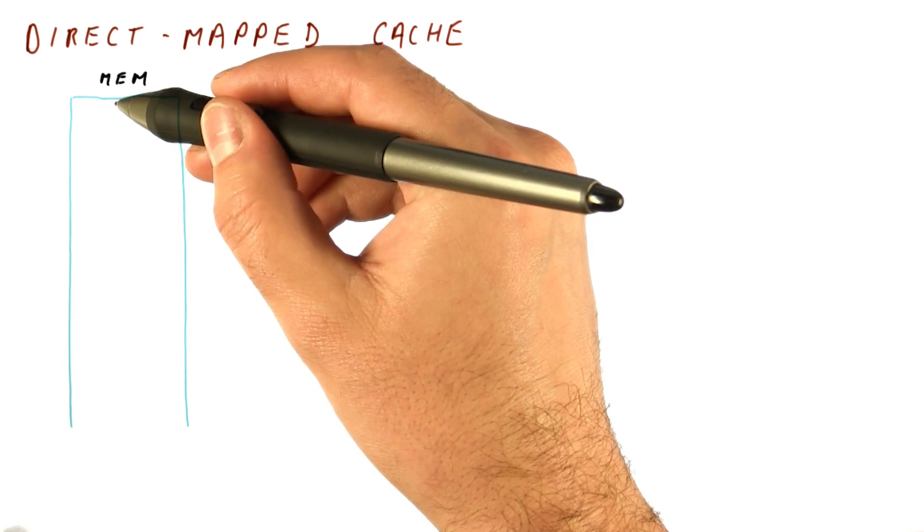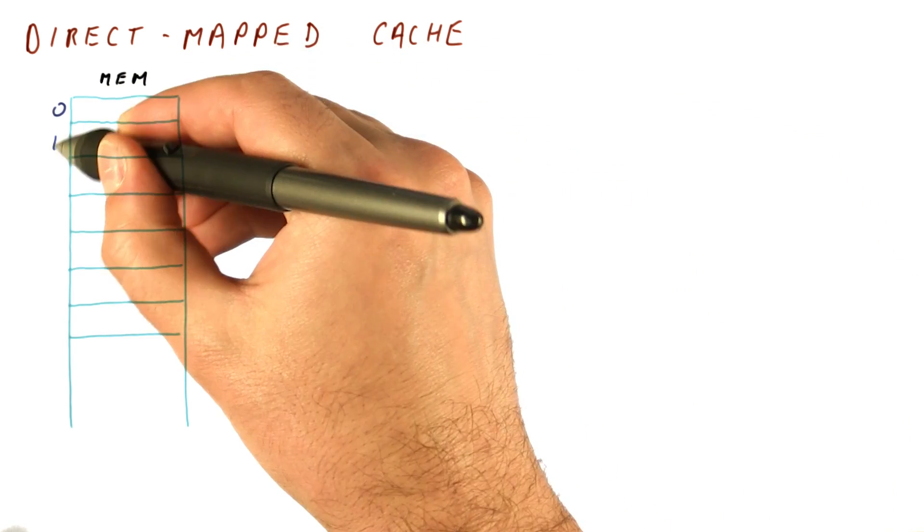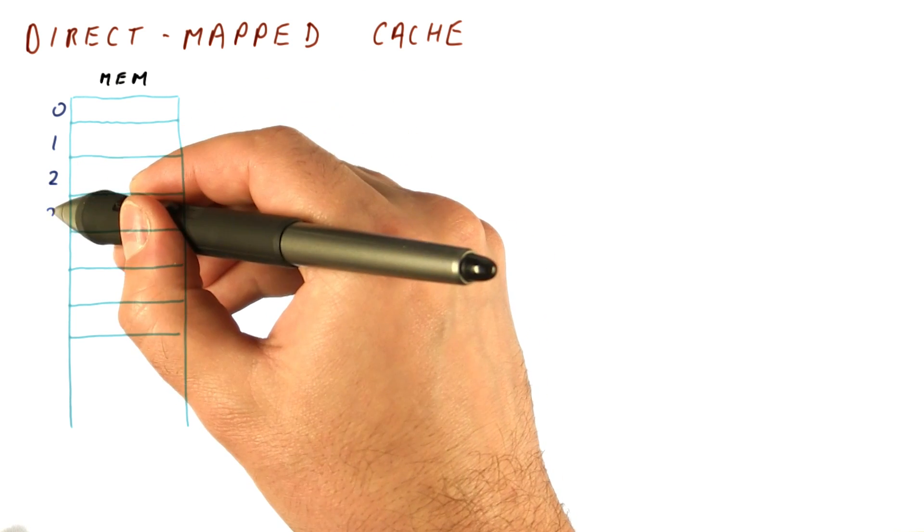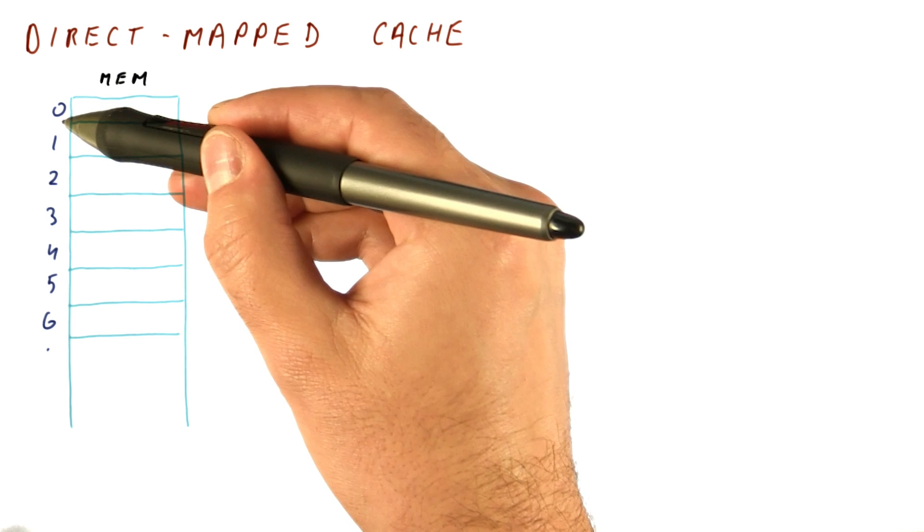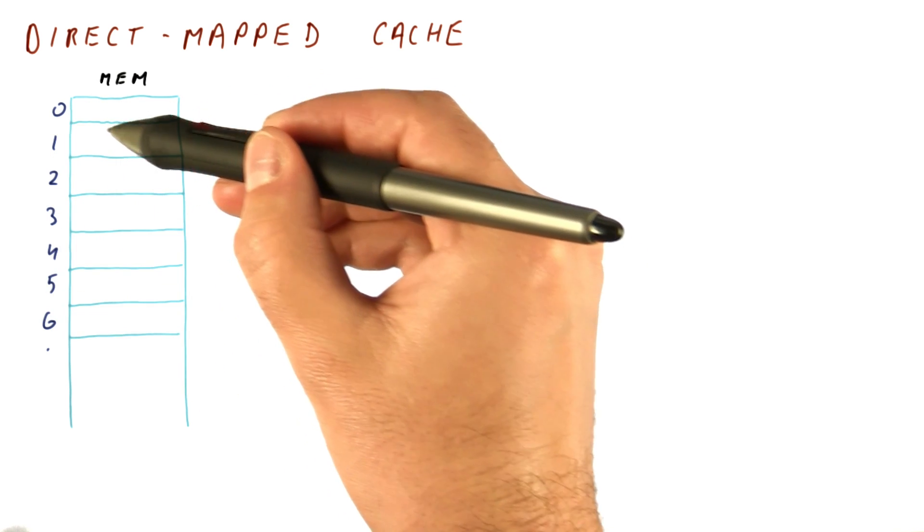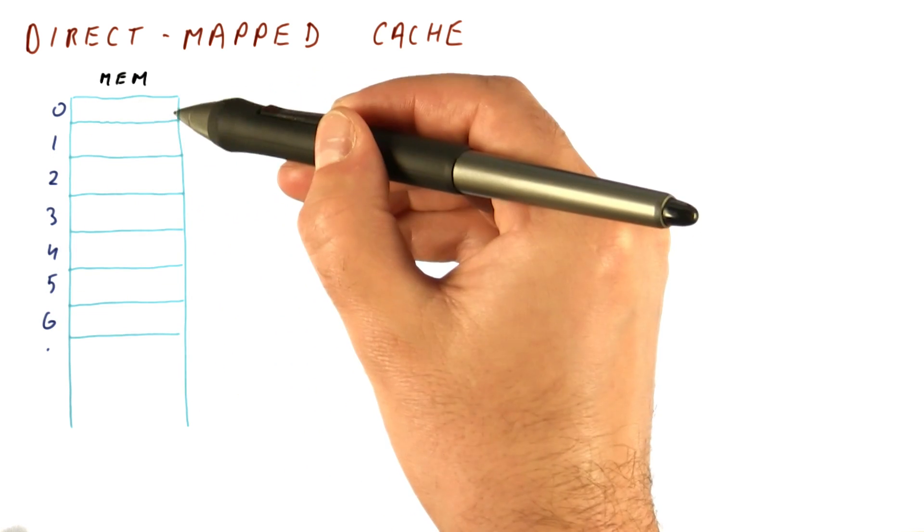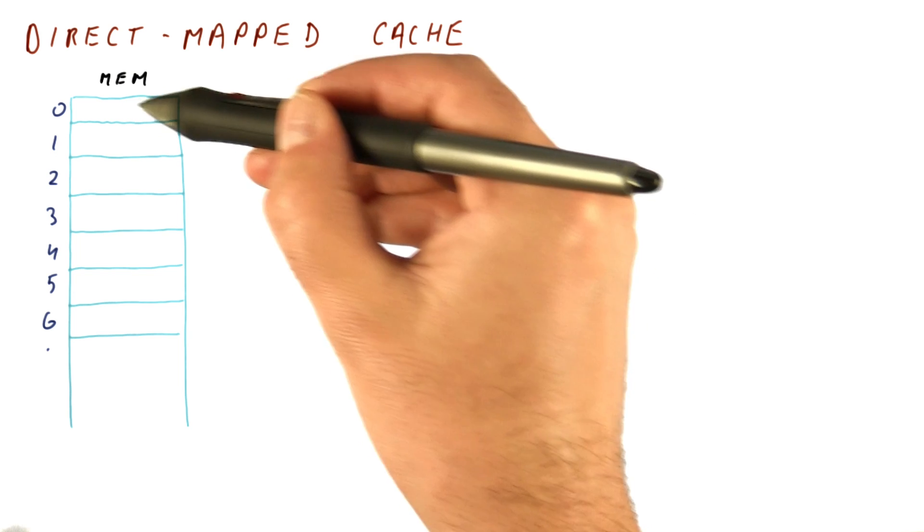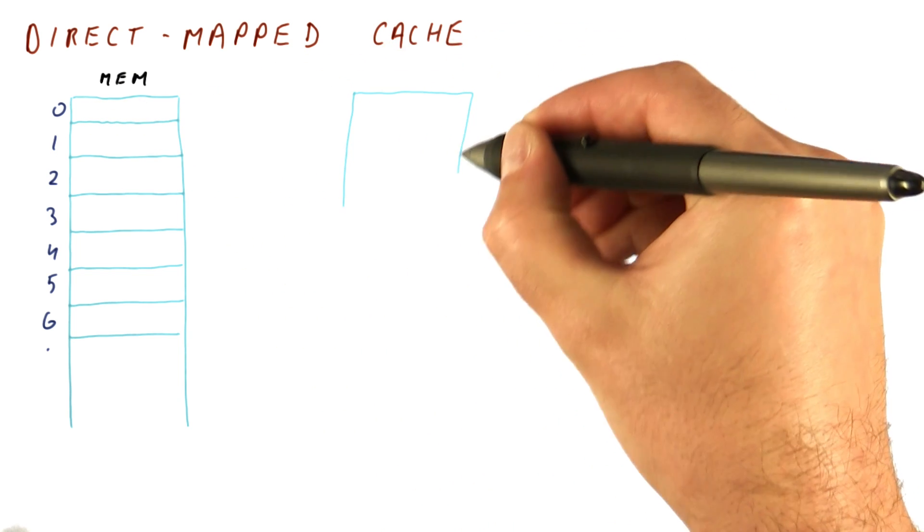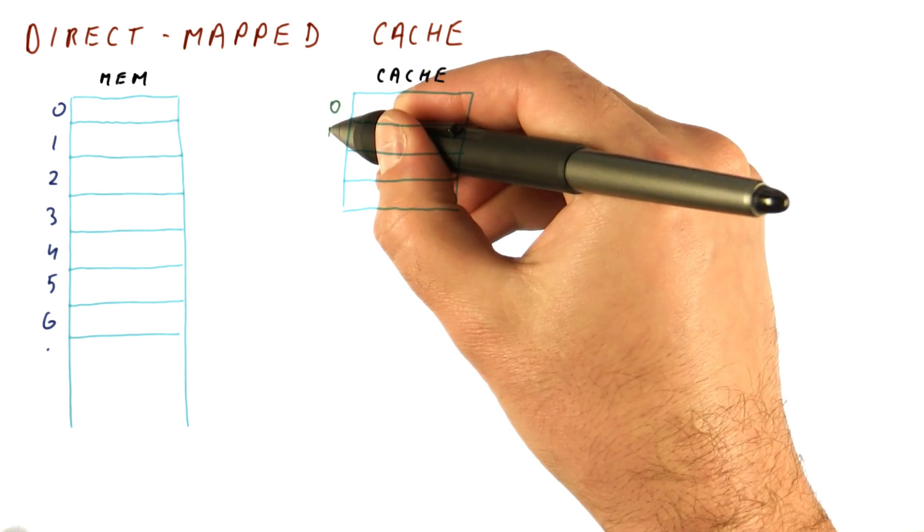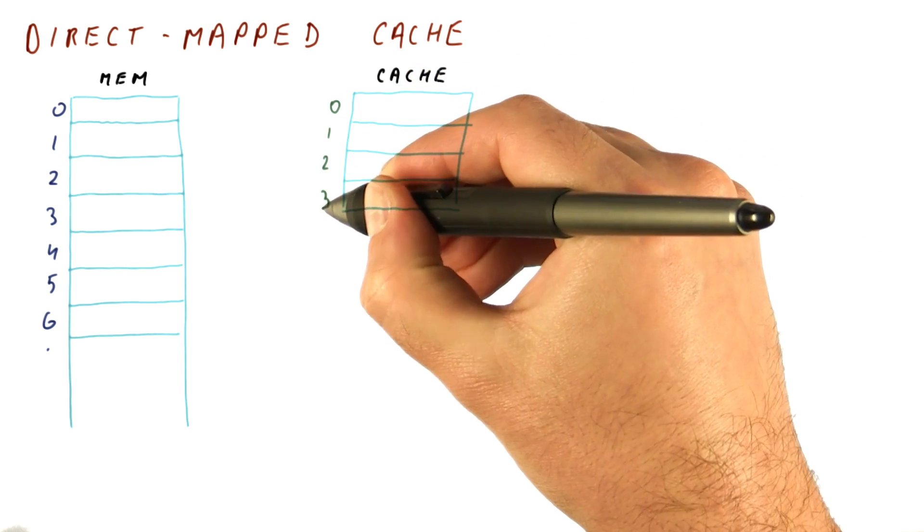If this is the memory, and it contains blocks 0, 1, 2, 3, 4, 5, 6, etc. And these are the block numbers, not the addresses. So I'm assuming that this thing here is an entire block worth of memory, which contains multiple locations. And let's say we have a cache with room for four blocks. We can number the lines 0, 1, 2, and 3.